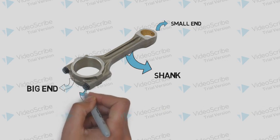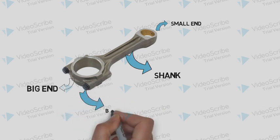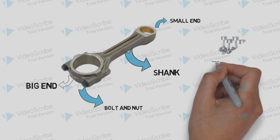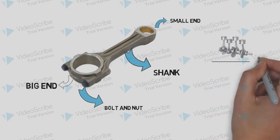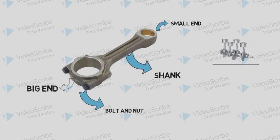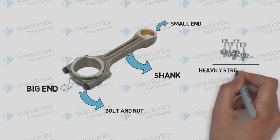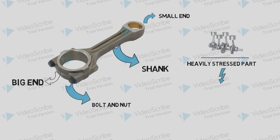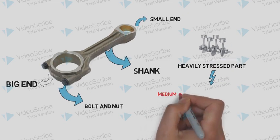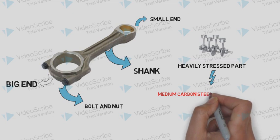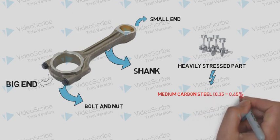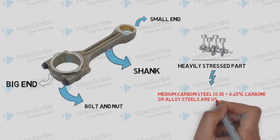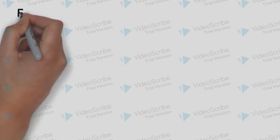The small end is connected to the piston and the big end is connected to the crankshaft using a nut and bolt arrangement. So there are four important components to be designed: the shank, big end, small end, and bolts and nuts. The connecting rod is one of the highly stressed parts of an IC engine because it transmits the high force generated by the power stroke to the crankshaft.